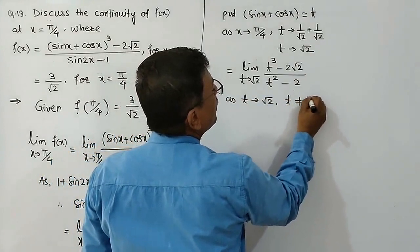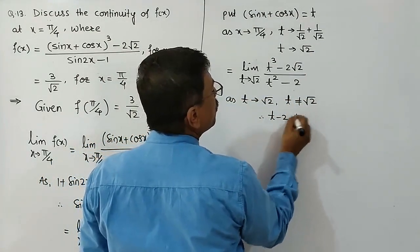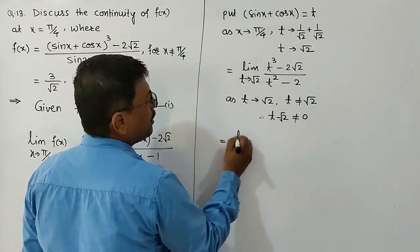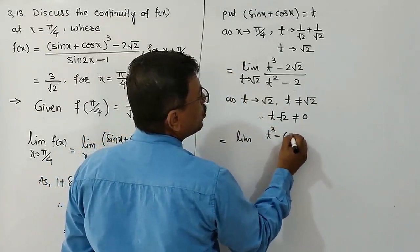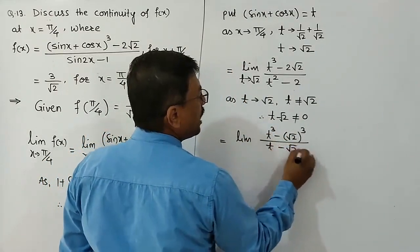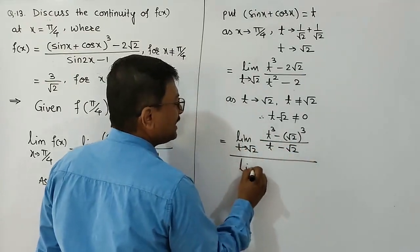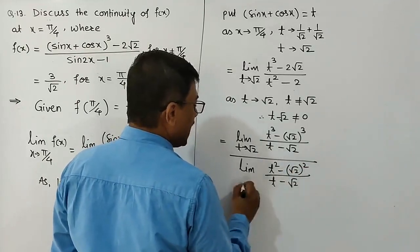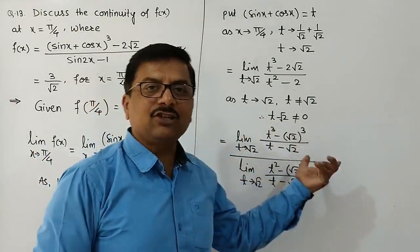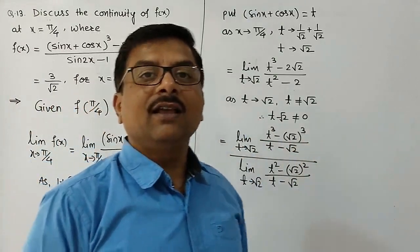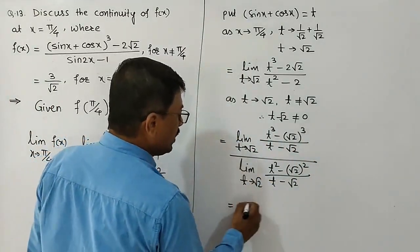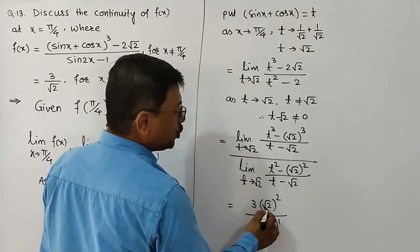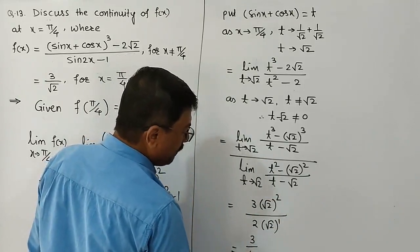As t → √2, t ≠ √2, so (t − √2) ≠ 0. We divide numerator and denominator by (t − √2) and separate the limits. The limit becomes: [limit of (t³ − (√2)³)/(t − √2) as t → √2] divided by [limit of (t² − (√2)²)/(t − √2) as t → √2]. Using the formula lim(xⁿ − aⁿ)/(x − a) = n·aⁿ⁻¹, we get: [3·(√2)²] / [2·(√2)¹] = 3·2 / (2·√2) = 3/√2.